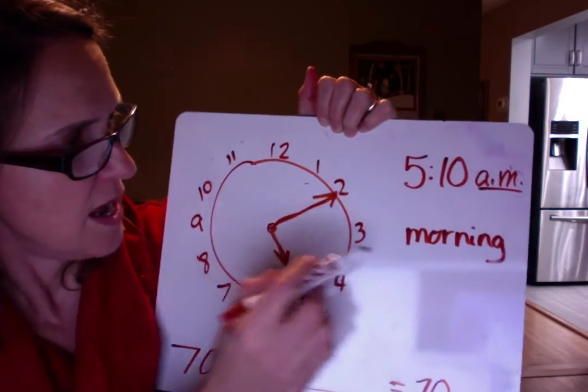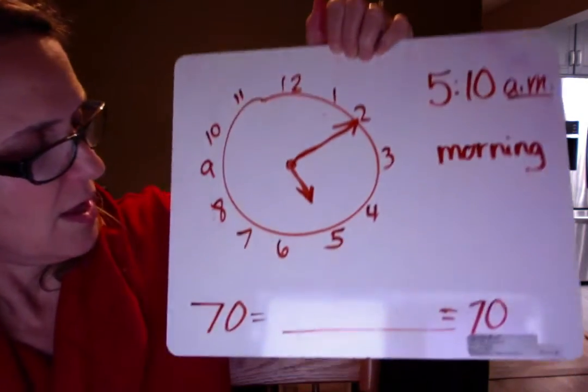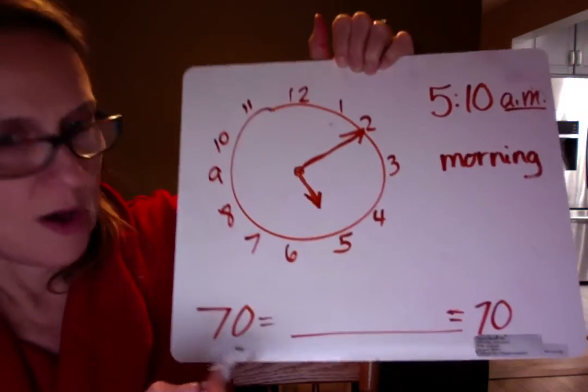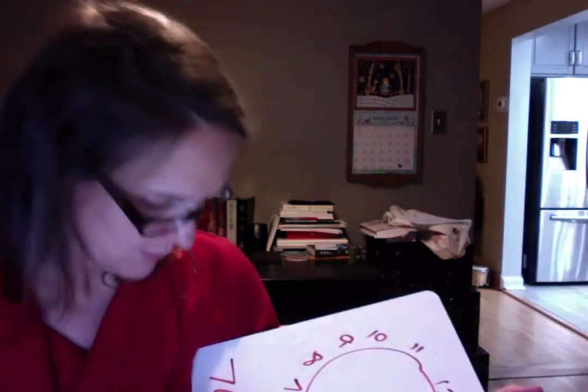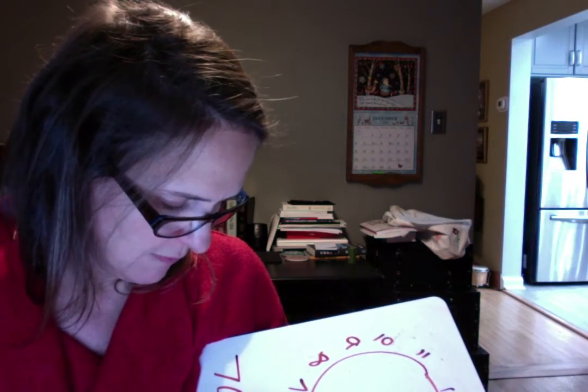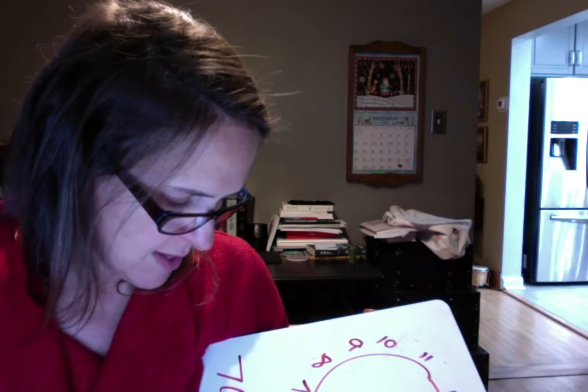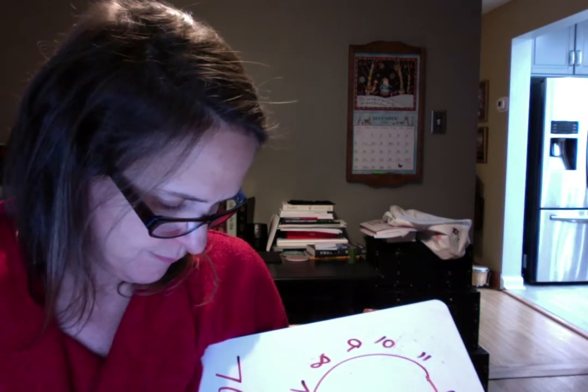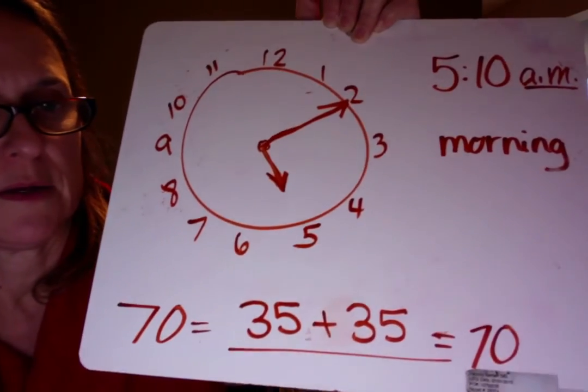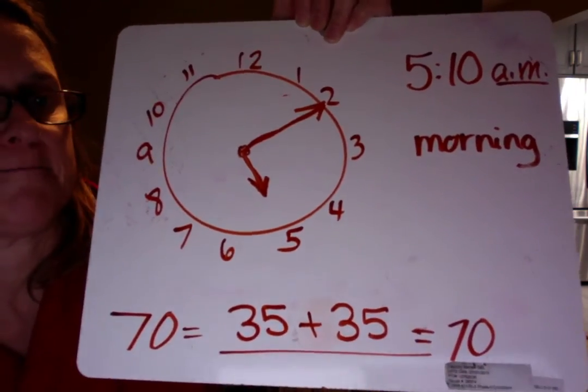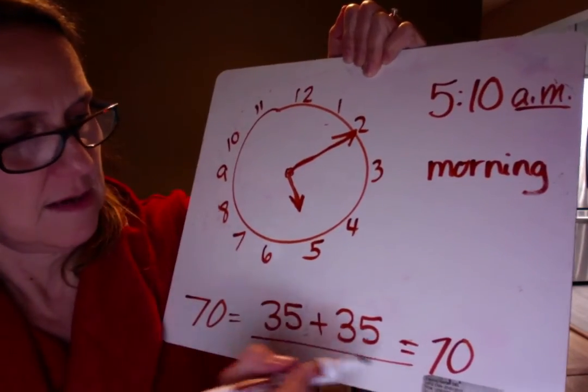Okay? So this would be 5, 10 AM. And the other thing you had to do was come up with a number sentence for 70. Maybe you did 35 plus 35. I don't know what you picked, but I'm sure it's something fantastic. 60 and 10 make 70.